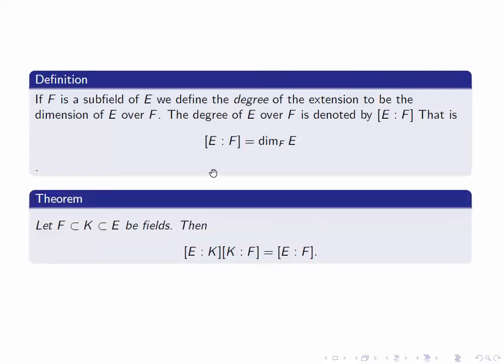The Tower Fields theorem says that if we have a chain of fields like this, with an intermediate field K between F and E, then we can define all of these different extension degrees. The degree of the larger extension E over F is the product of the degrees of E over K and K over F. This is a very important result, one that we use all the time in Galois theory.